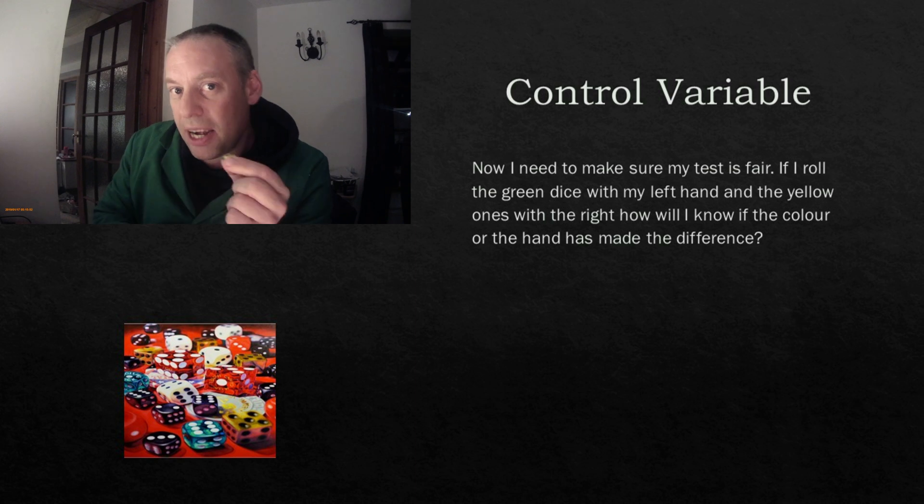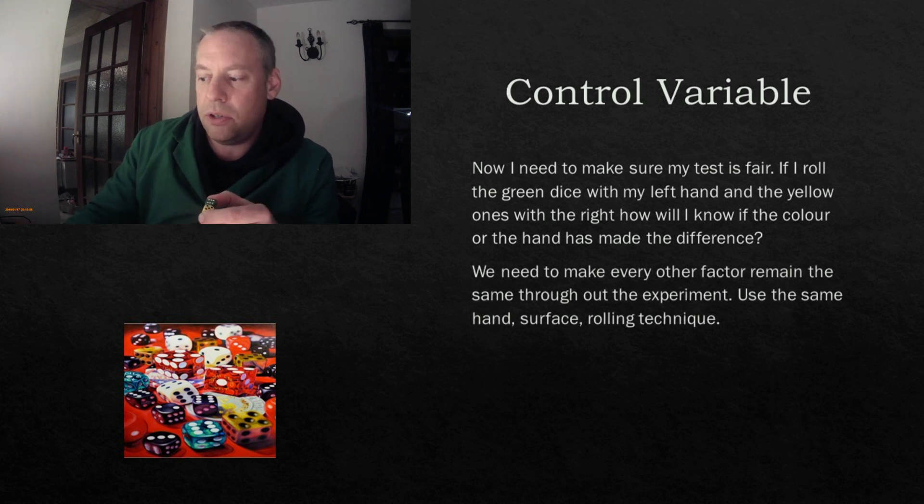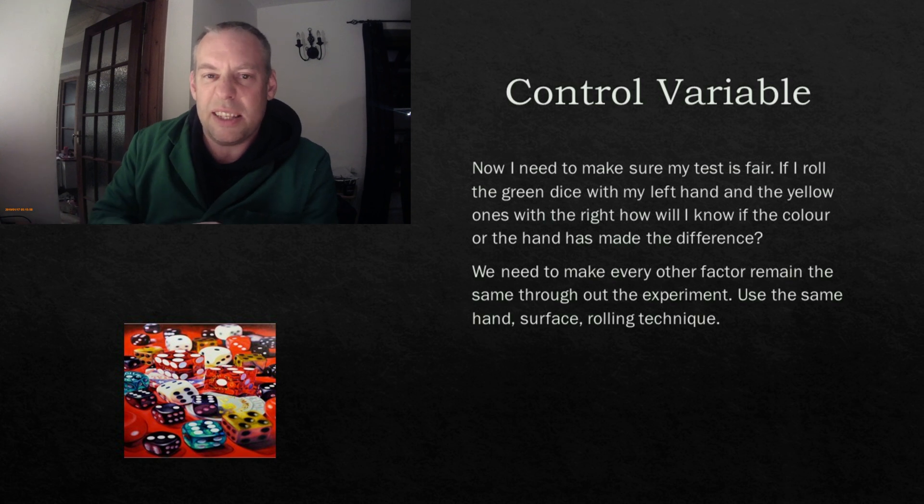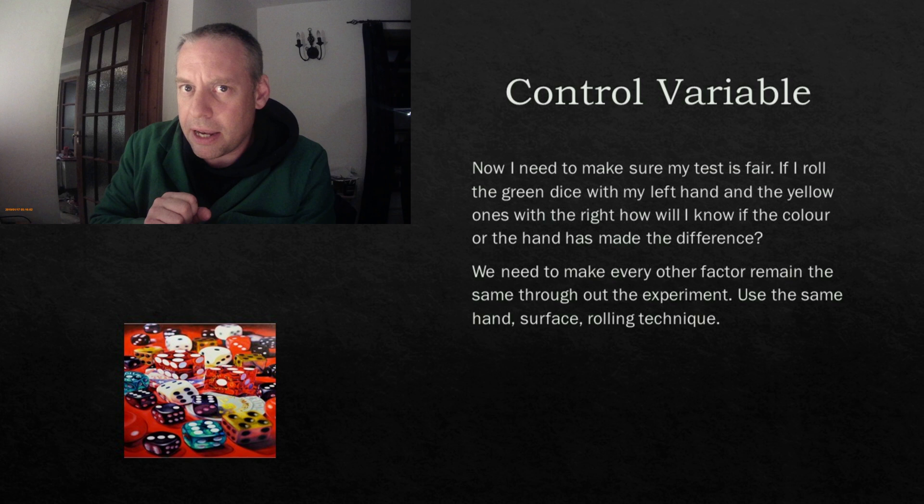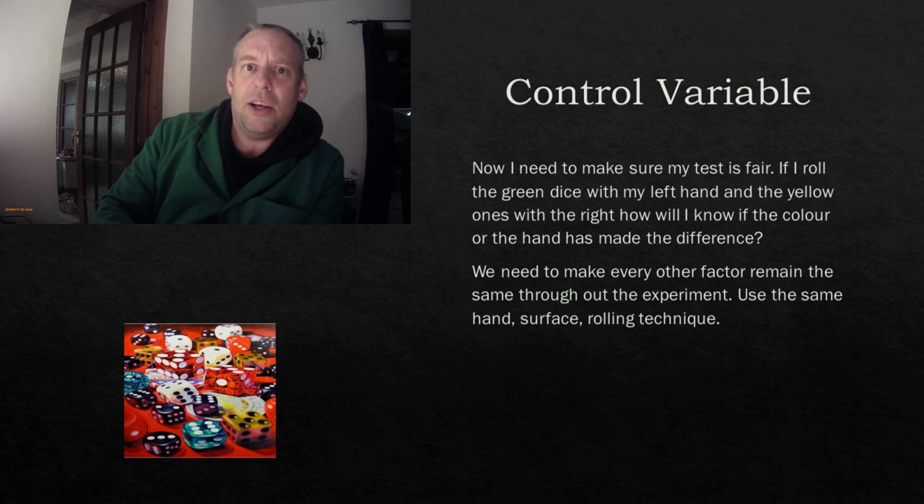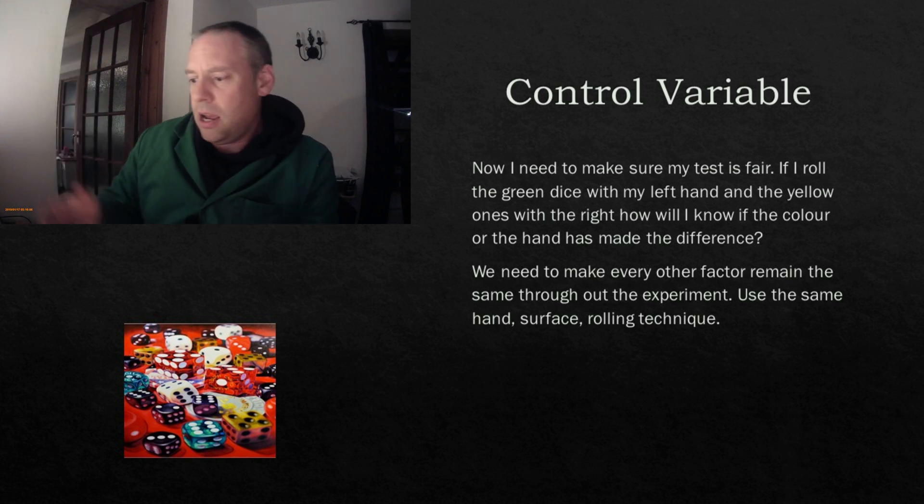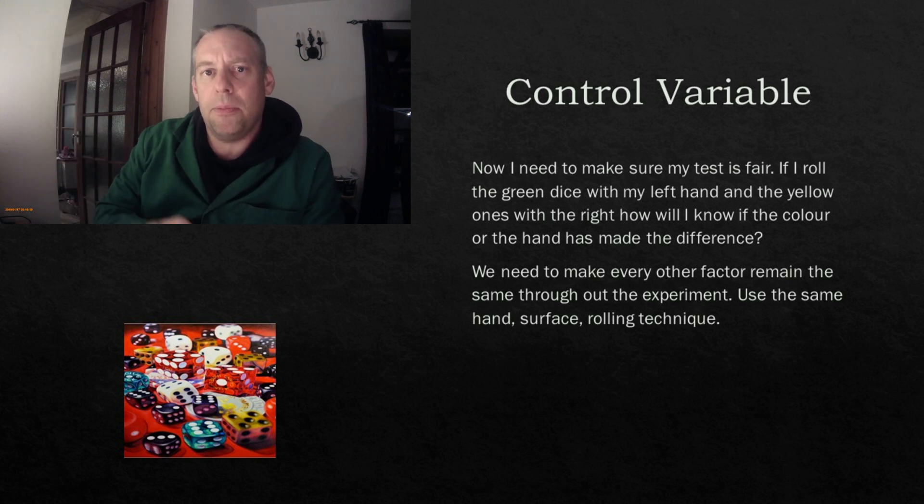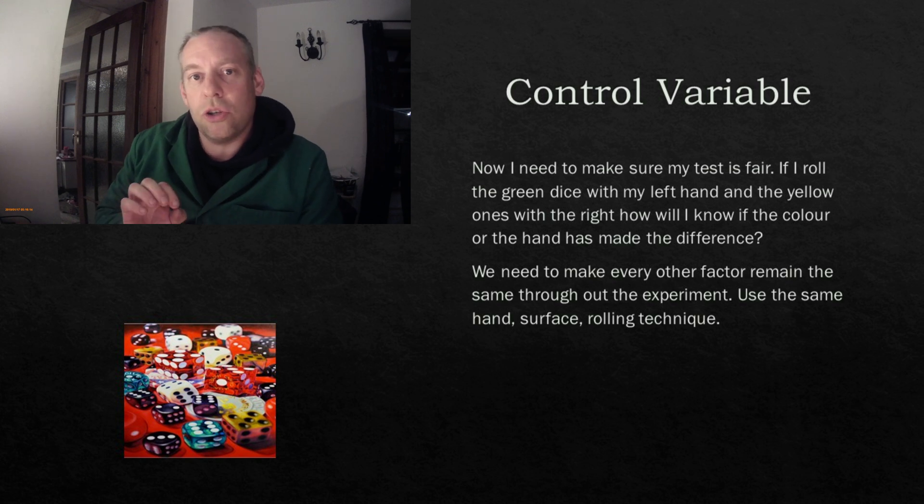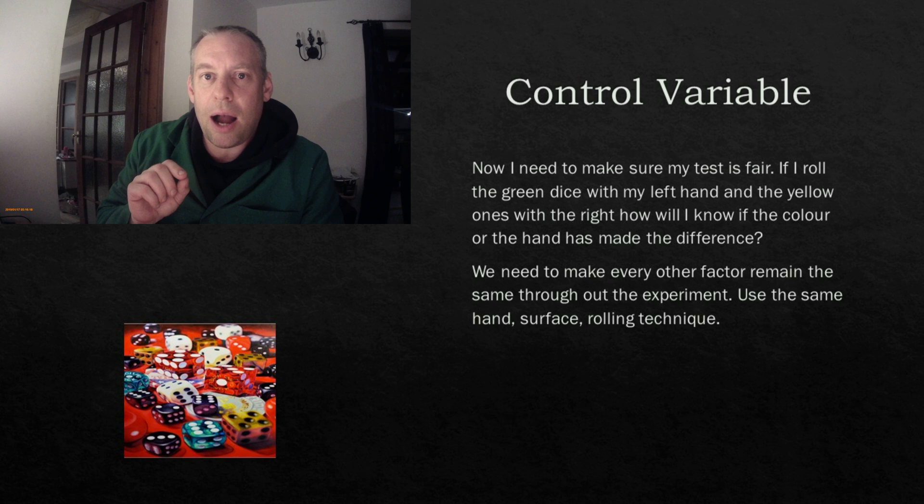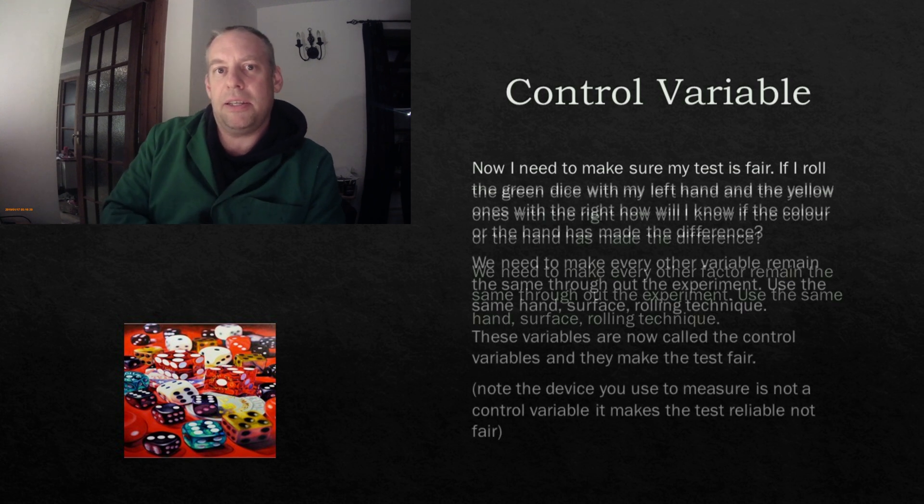So I'm going to change the colour but I'm going to keep the same all of those other things that we discovered. So the same hand, the same surface, the same rolling technique. I'm not going to be kissing the dice. I'm going to make sure that I drop it at the same height. I'm going to try and keep as many of the variables the same. These variables are called control variables. And control variables are how we ensure that the investigation is fair.